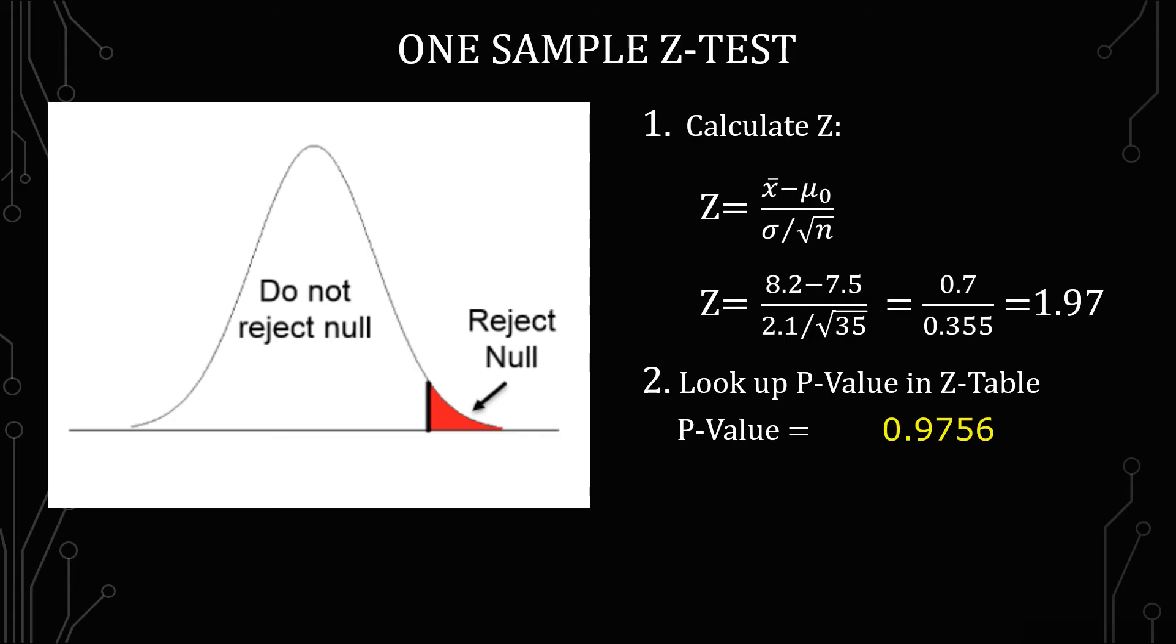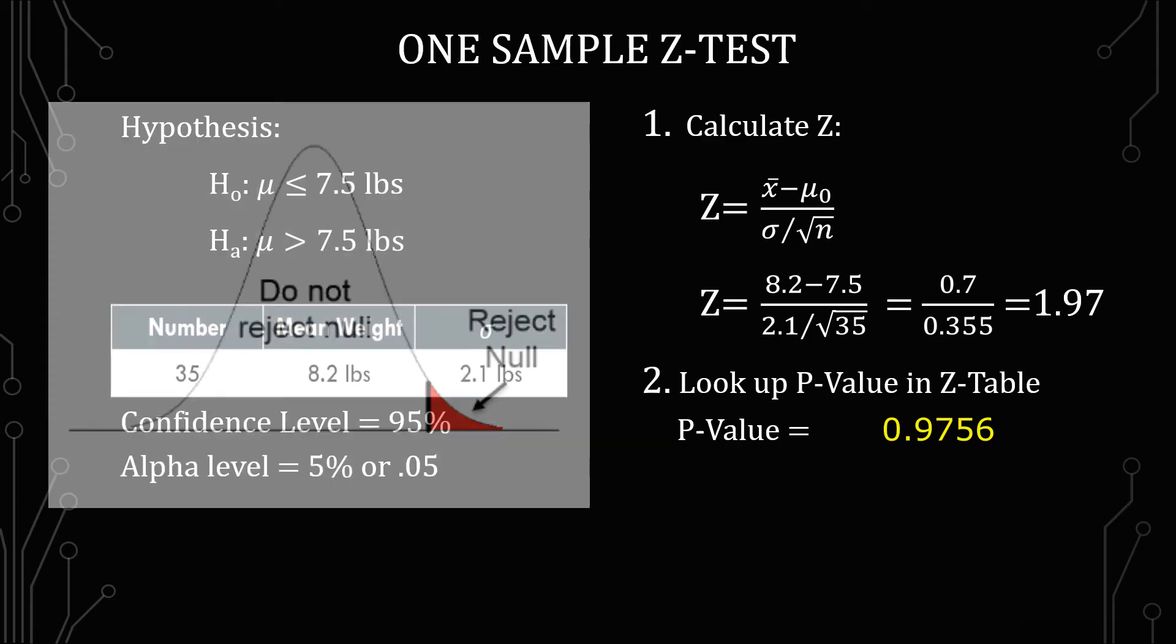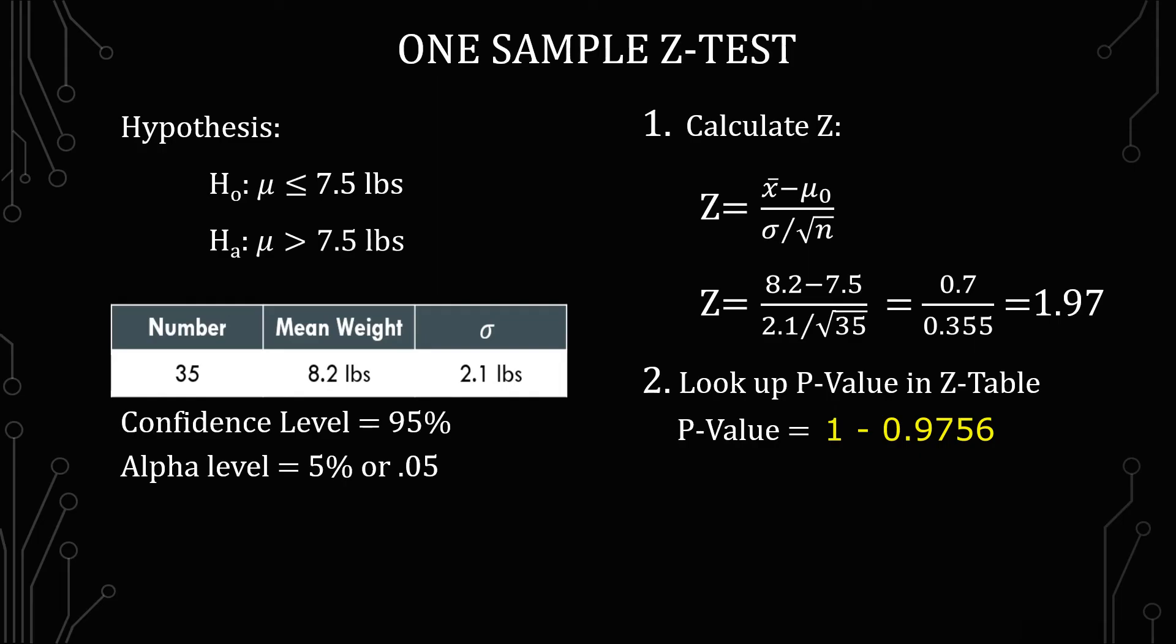Because the z-table looks at everything to the left of the value and adds it all up, we have to do a 1 minus that value. And so what we find for 1.97 is everything to the left of 1.97 is 0.9756. And so to find out what the p-value is, we have to calculate 1 minus 0.9756, and we get 0.0244.